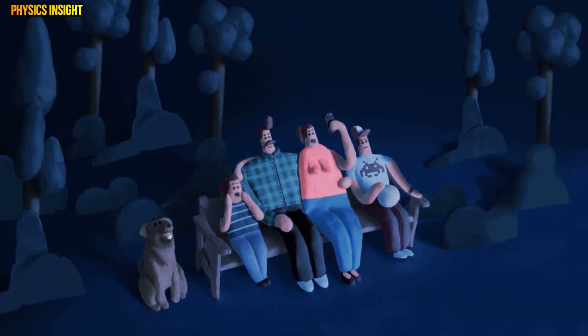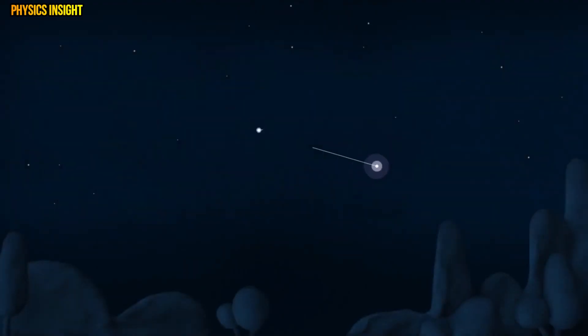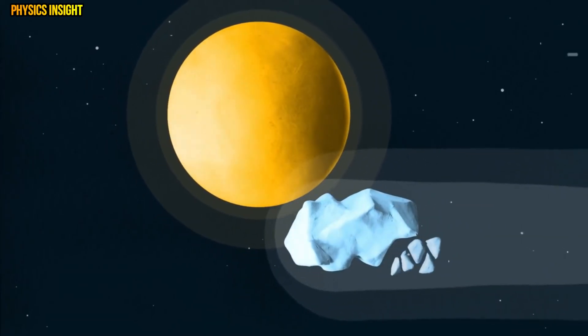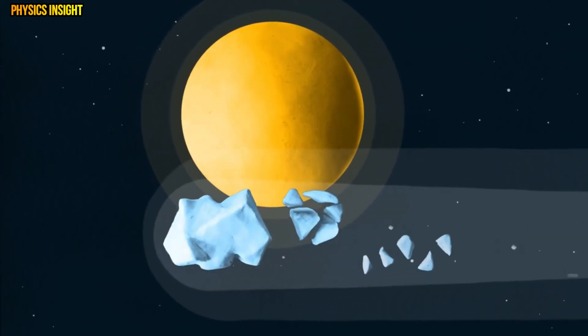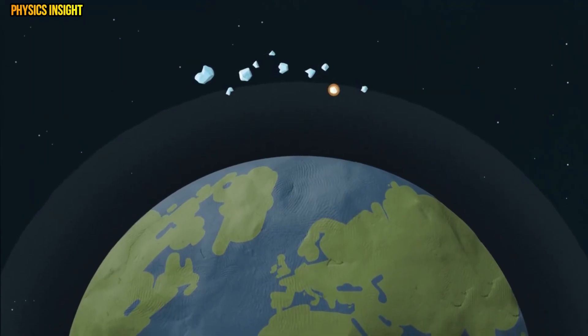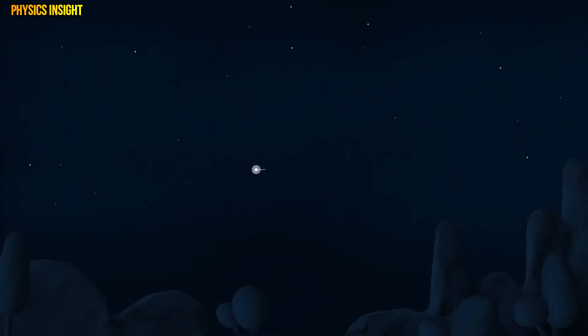Here on Earth we are treated to spectacular natural firework displays in the sky from orbiting comets. As they get close to the Sun they burp, splutter and crumble, leaving behind a trail of debris. At certain times of the year the Earth plies through these trails and bits of comets flare up as they fly through our sky and become meteors.